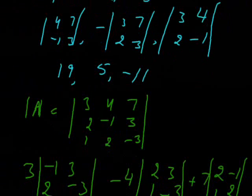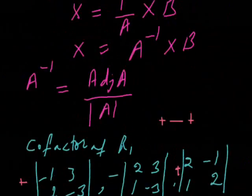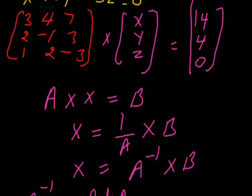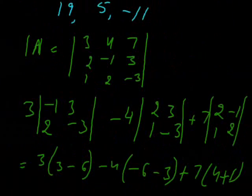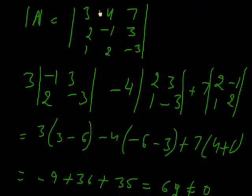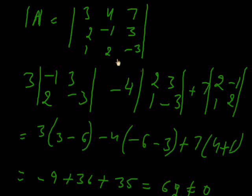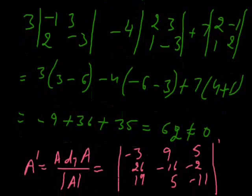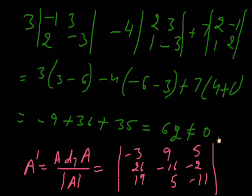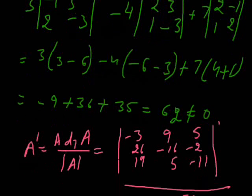After this, we will calculate its determinant. We are taking 3 and then this amount, with elements -1, 2, 3, minus 2 times the submatrix with elements 1, 3, -3, plus 7 times the submatrix with elements 2, -1, 2. After calculating this, the determinant is 62, which is not equal to 0. So there is a possibility of finding the values of x, y, and z.